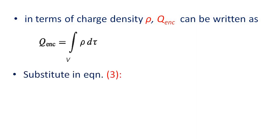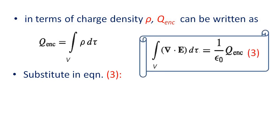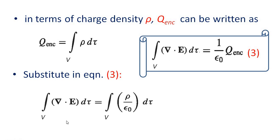Substituting the expression for q-enclosed into Equation 3, we get: the volume integral of divergence of E times d-tau equals the volume integral of rho over epsilon-zero times d-tau. Since 1 over epsilon-zero is a constant, we can write the equation in this form.